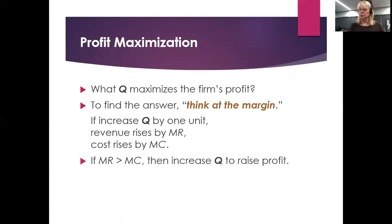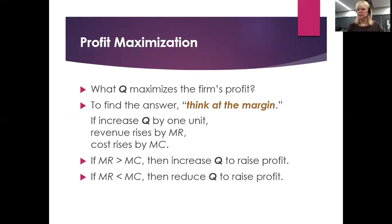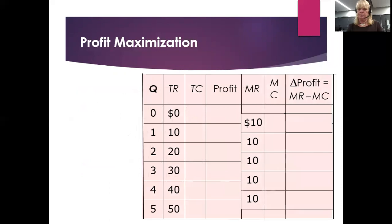If your marginal revenue — what you get paid for one more unit — is greater than your marginal cost — what it costs to make that unit — you made a profit on that unit and should produce more to increase total profit. On the other hand, if marginal revenue is less than marginal cost, you've reduced your total profit and lost money on that last unit. Let's do some calculations.